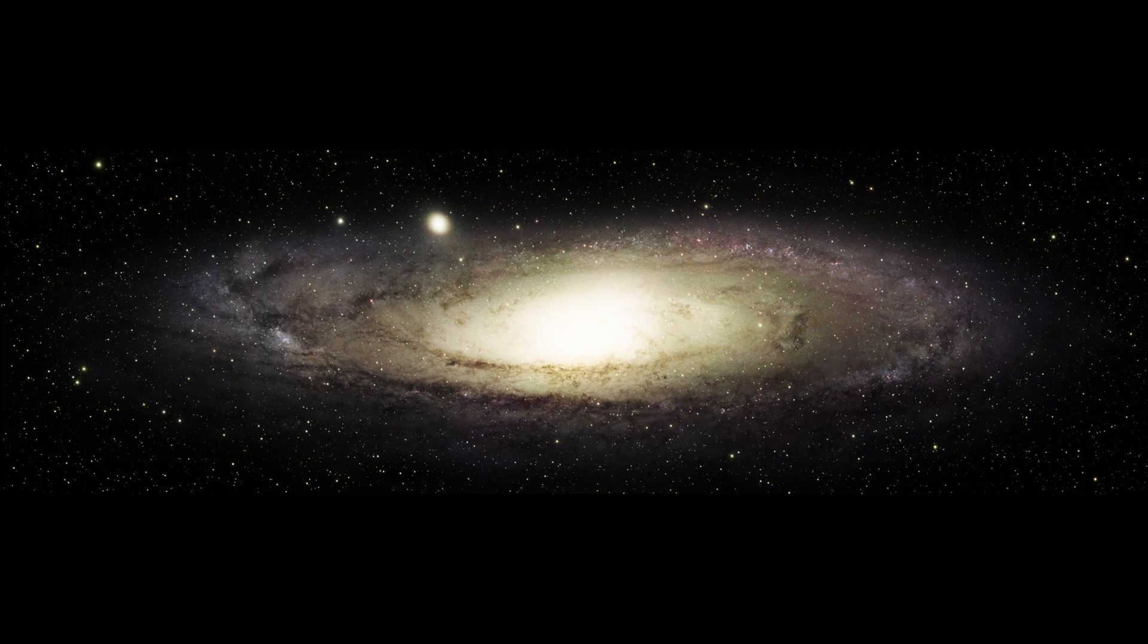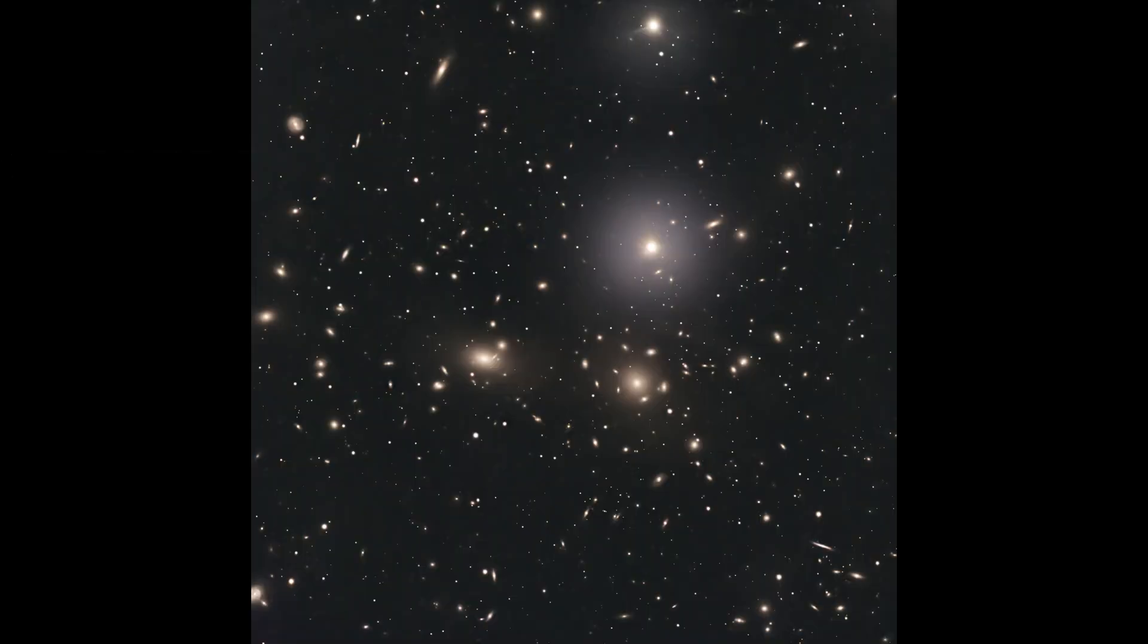There are very few objects in deep space that would really benefit from a rectangular orientation. One that comes immediately to mind is the Andromeda Galaxy. Beyond that, almost everything in space works just fine, or even better, with a square sensor. And most of the objects that are somewhat dish-shaped or flattened, like many galaxies, are often too far away, thus too small, to benefit from a rectangular sensor.